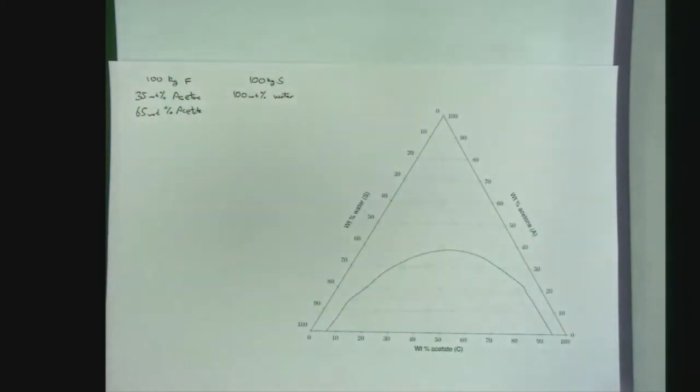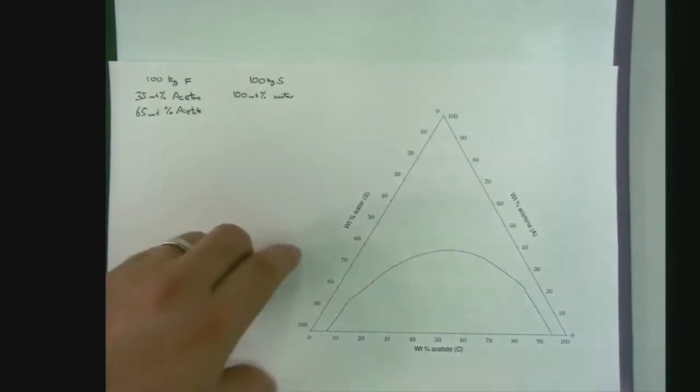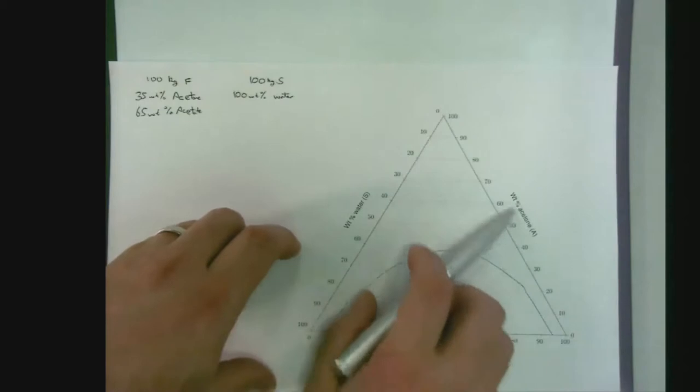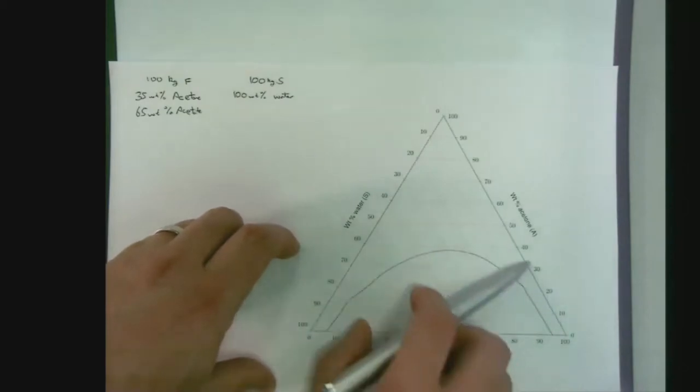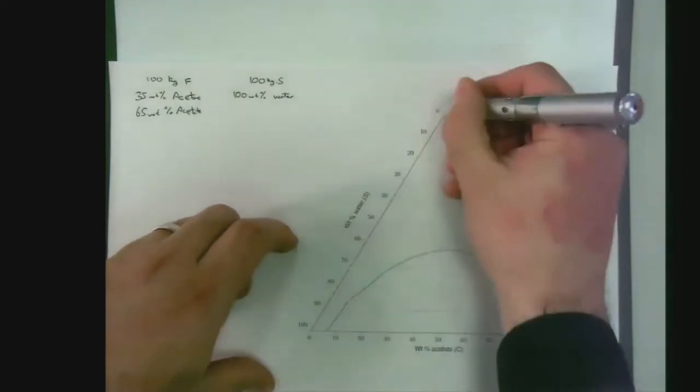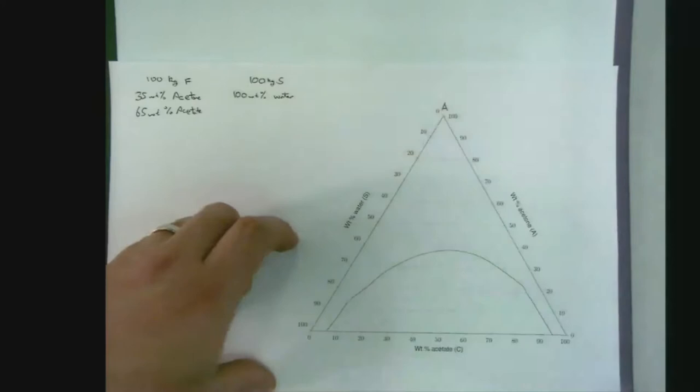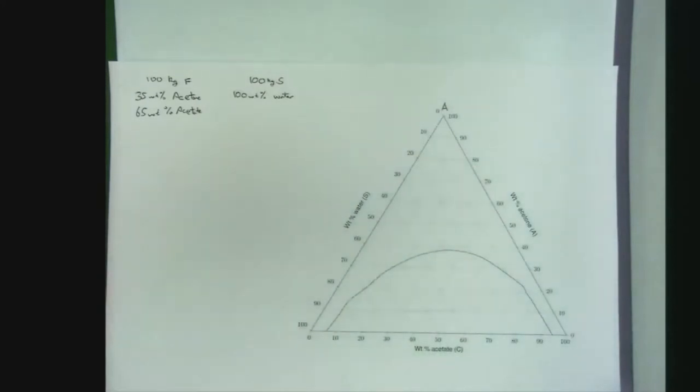The first thing we do is locate our feed point and solvent point on the ternary diagram. If we look at our axis, we've got weight percent acetone, and the scale is increasing up to here, so we know this top point is our pure acetone component.